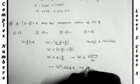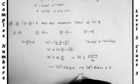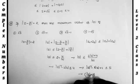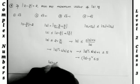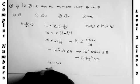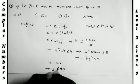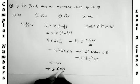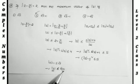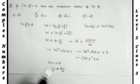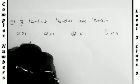Adding 1 to both sides: |z|² - 2|z| + 1 ≤ 5, which gives (|z| - 1)² ≤ 5. Therefore |z| - 1 ≤ √5, so |z| ≤ √5 + 1. The maximum value of |z| is √5 + 1.